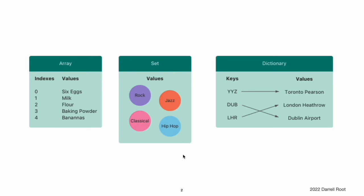Arrays, sets, and dictionaries in Swift are always clear about the types of values and keys that they can store. This means that you cannot insert a value of the wrong type into a collection by mistake. It also means you can be confident about the type of values you will retrieve from a collection. Swift's array, set, and dictionary types are implemented as generic collections. For more information about generic types and collections, see Generics.